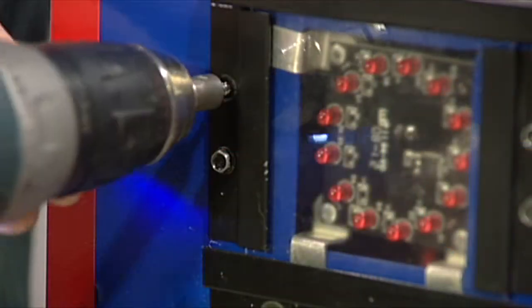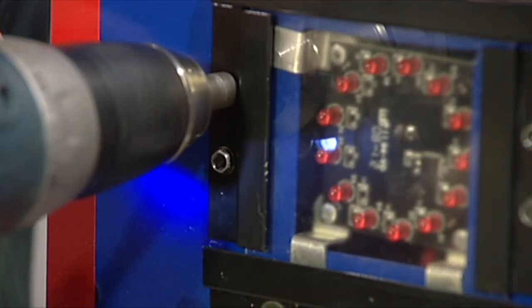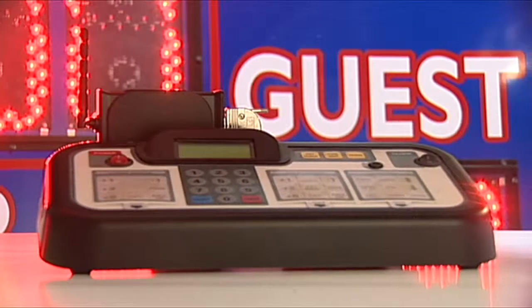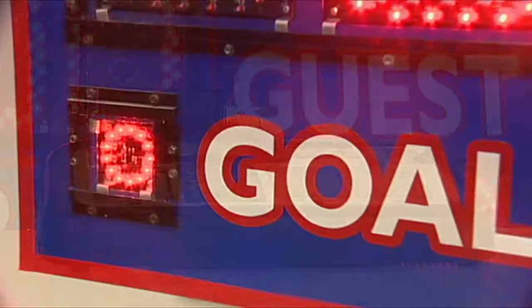Fasten the screws holding the dot to the scoreboard. Turn on the scoreboard power and your keyboard controller to make sure the new dot is functioning correctly.